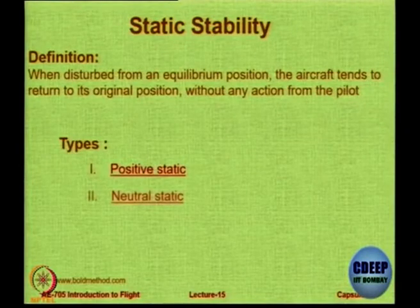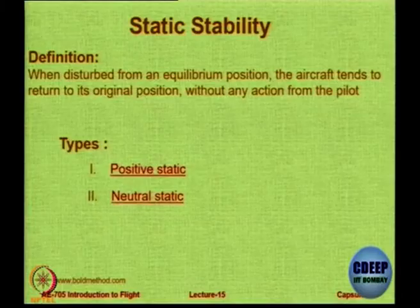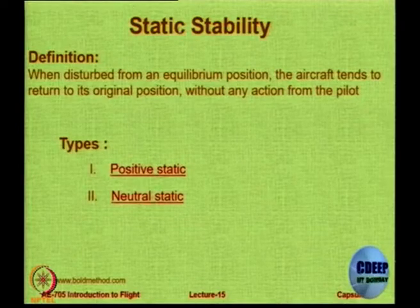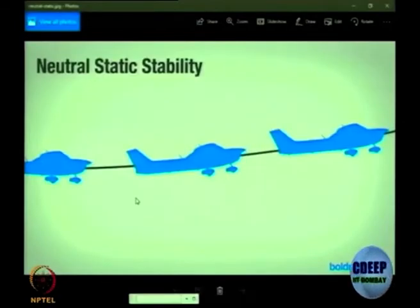Then you have neutral static stability, in which case there will be no attempt to return to the undisturbed state. If disturbed, it remains disturbed — neither coming back nor going away. This is called neutral static stability. It is still considered stable because it is not going away.